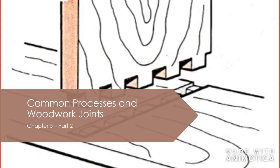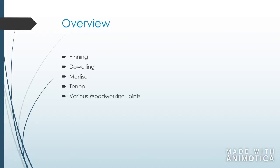Hello and welcome to another episode of Woodwork Technology. Today we're doing part 2 of chapter 5 on common processes and woodwork joints. We're going to go through pinning, doweling, mortise and tenon, and then look at various woodwork joints. If you want to take notes, grab your pen and paper and let's go.